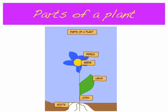Parts of a plant: roots, stems, leaves, seeds, petals.